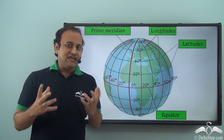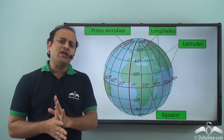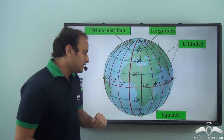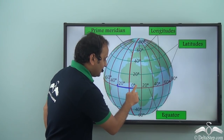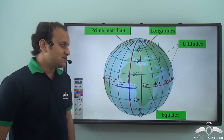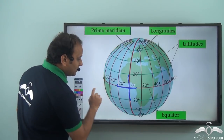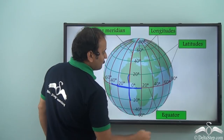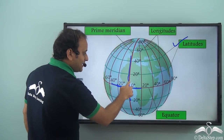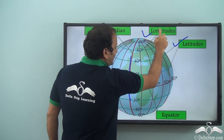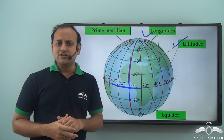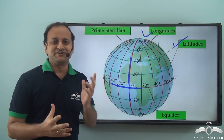For our convenience, we have drawn a number of lines on the entire earth. Among them, the prime meridian and the equator are the most important ones, and with them as the base we have drawn other lines. With the equator as the base we have all the different latitudes, and with all these latitudes and longitudes we are able to locate any place on planet earth.